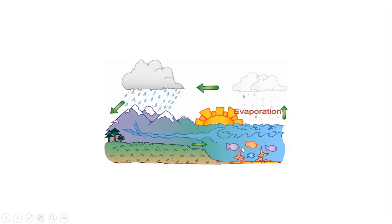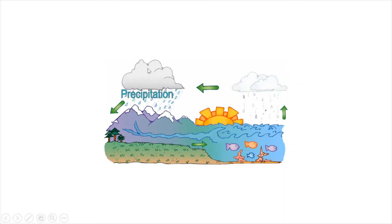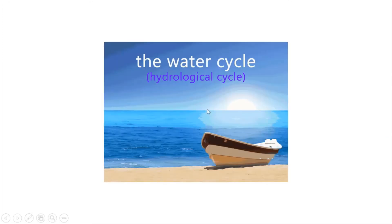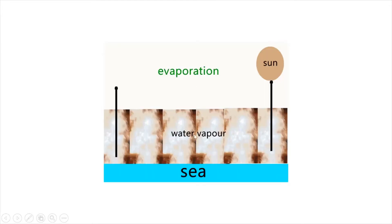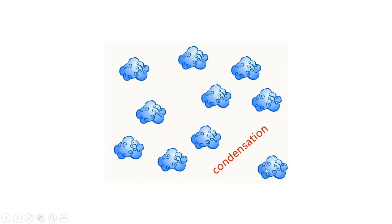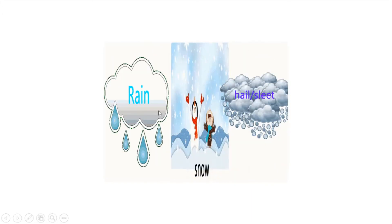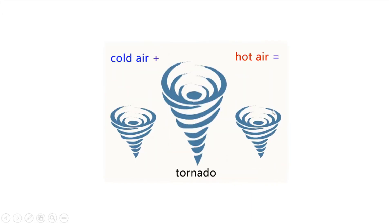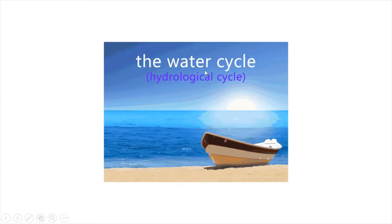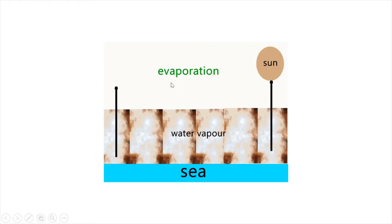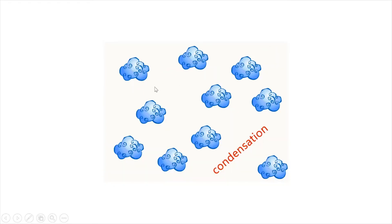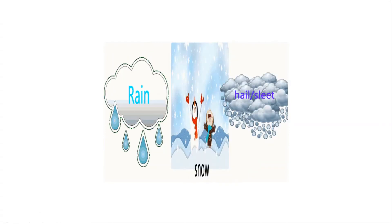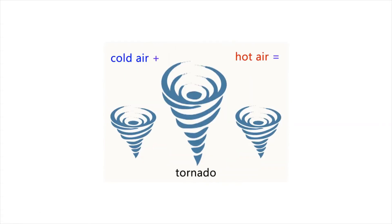Let's see here. From different forms of water bodies, how evaporation takes place, then condensation, then precipitation, then rain, then runoff — and how the hydrological cycle occurs. From the sea, water vapour evaporates. If it occurs in the form of snow, hail, or sleet due to cold air, that is hail or snow or sleet. If it is hot, then it is a tornado.